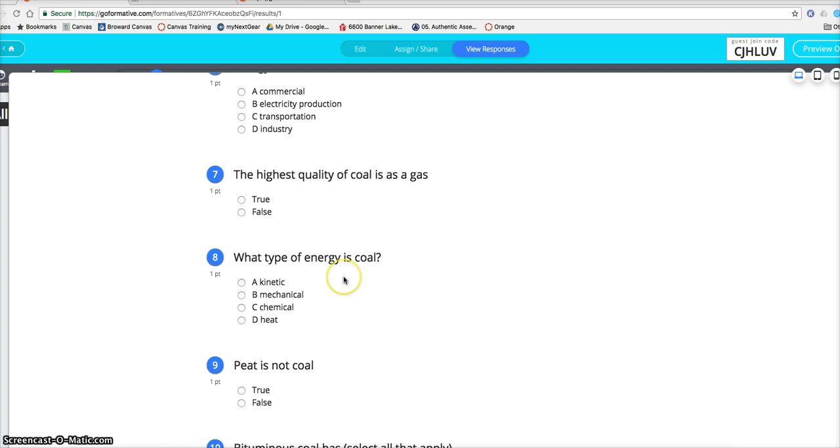What type of energy is coal? Chemical. And when you use it to make electricity, what are the energy transformations? Chemical to heat, to mechanical, to electrical.